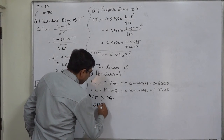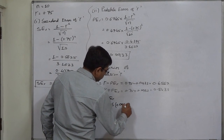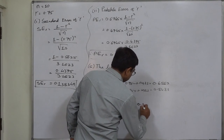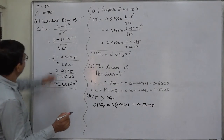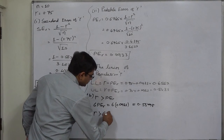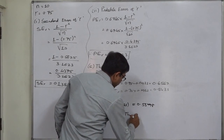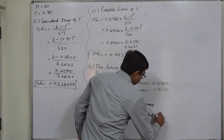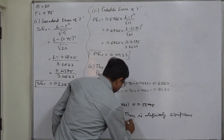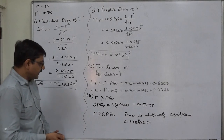If the coefficient of correlation is greater than the probable error, that is not sufficient. It should be greater than six times the probable error. So we calculate six times the probable error: 6 × 0.0933 = 0.5598. Our coefficient of correlation is 0.75, which means the coefficient of correlation is greater than six times the probable error. Therefore, we can conclude that there is definitely significant correlation between the two variables under consideration. This is our interpretation.